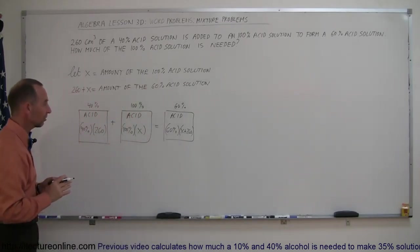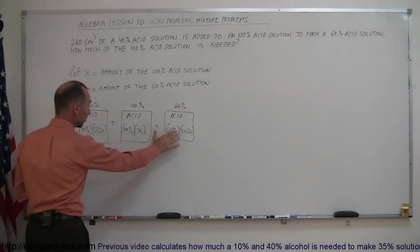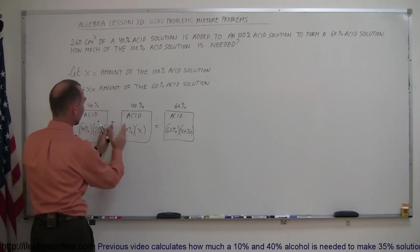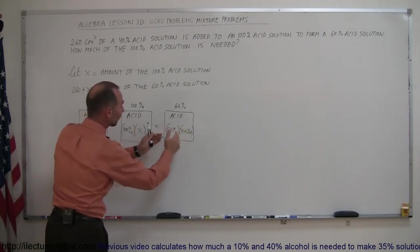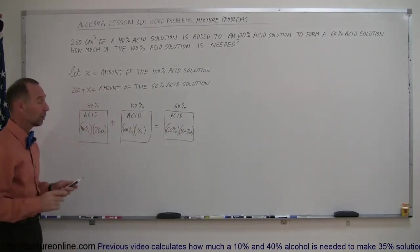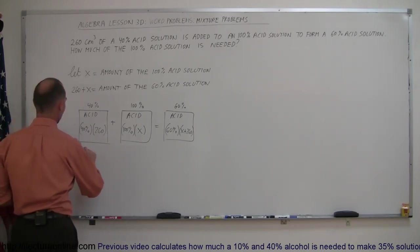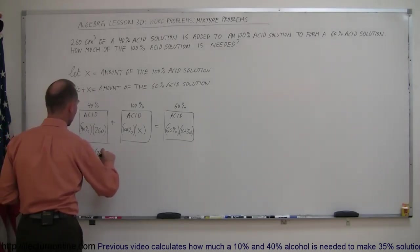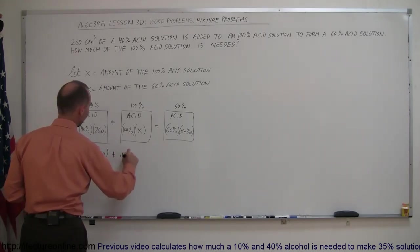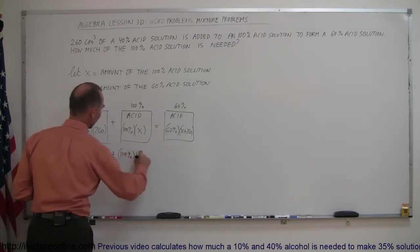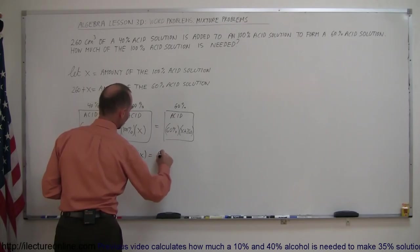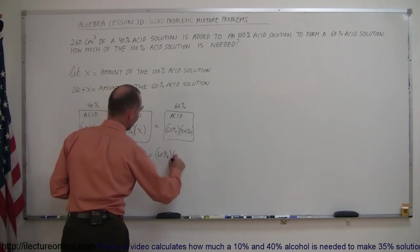That's how you keep track of the acid, and this plus this must add up to that. The amount of acid here plus the amount of acid here must add up to the total amount of acid. So now we have an equation: 40% times 260 plus 100% times X equals 60% times X plus 260.